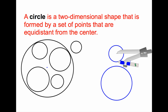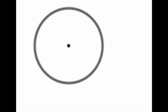Now let's get into the parts of circles, because that's what this video is going to talk about. Here's a circle, and the point in the center of the circle is called the center point. This defines a circle, because without a point you can't have any set of points that are the same distance from it. Often you'll see that the center point of a circle is labeled with a letter — so we'll call this circle A. If there were a B here, we'd call it circle B.